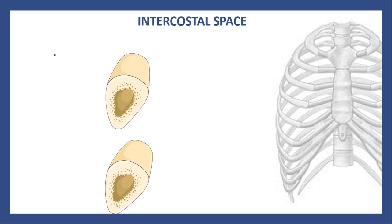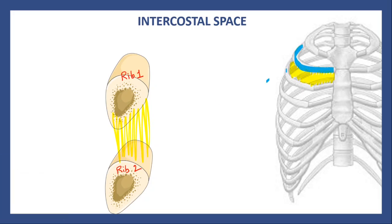Hello everyone, the NerdBerry here. In this video we will quickly learn about the anatomy of intercostal spaces. The intercostal space is the space between two ribs. So this is rib one and this is rib two, and the space between these two ribs is known as the intercostal space. If we see the thoracic cage, the intercostal space is the space you can see between the two ribs, and yellow represents the intercostal space.